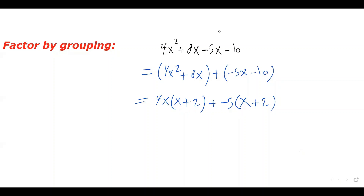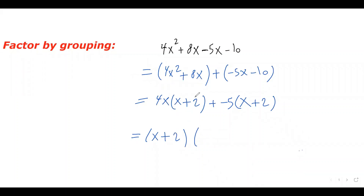Now I have these two terms and I need to find the greatest common factor between them, which is x plus 2. I factor that out. The first term divided by x plus 2 — they cancel — leaving 4x. Then plus negative 5, which is just minus 5. Negative 5 times x plus 2 divided by x plus 2 — they cancel — leaving negative 5. So the answer is (x + 2)(4x − 5). This is the factored form of this expression. That's how we factor by grouping.